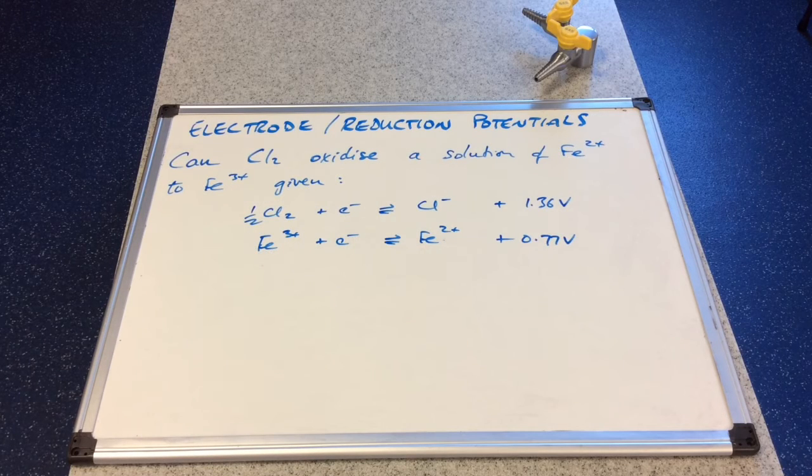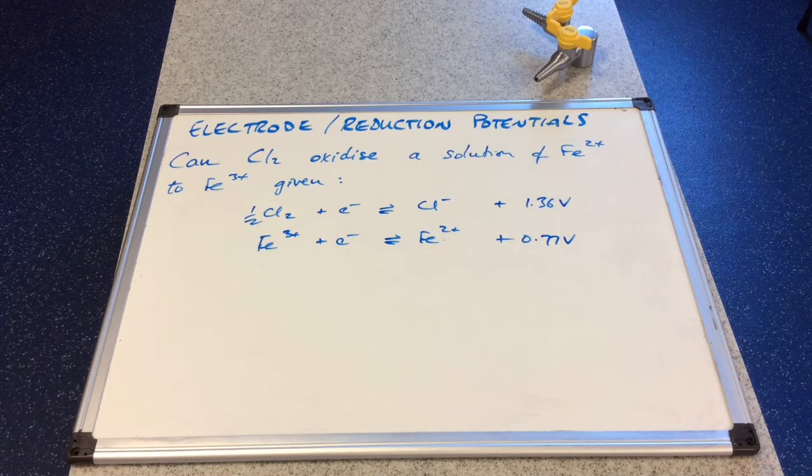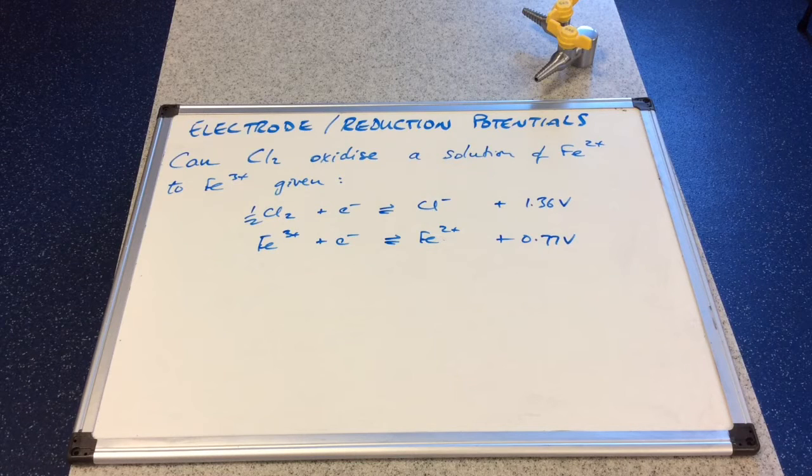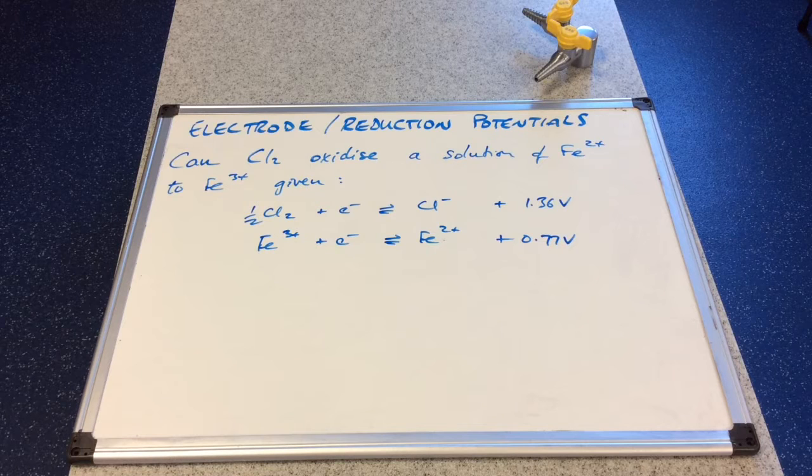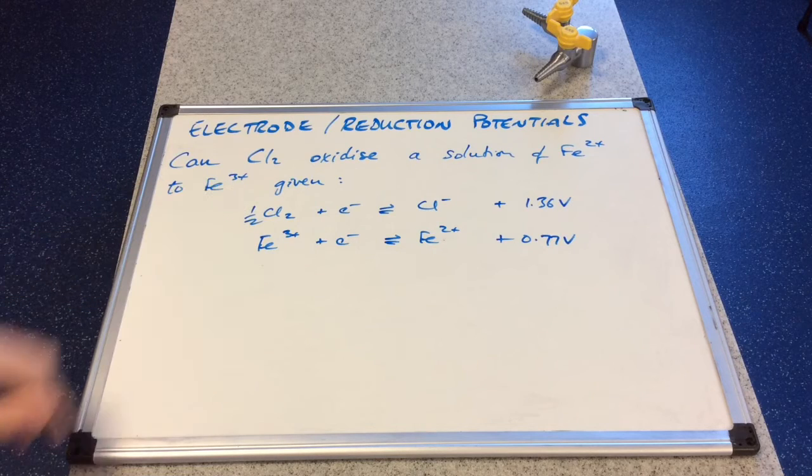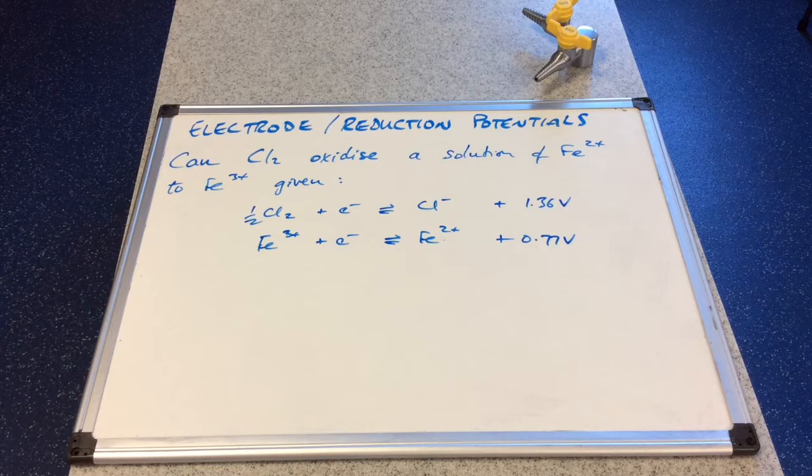So we'll apply what we've learned so far to this question. Can chlorine oxidize a solution of Fe2+? And we're given the electrode potentials for the half equations or half cells involved in the process.